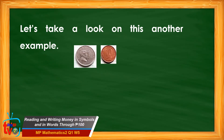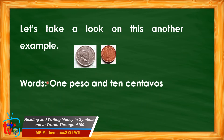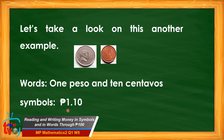Let's take a look at another example. We have the one-peso coin and ten-centavo coin. How do we write it in words? We write one peso and ten centavos. What about in symbols? We write the peso sign first, then one, followed by a decimal point, then ten centavos. The decimal point separates the peso from the centavos. We read this as one peso and ten centavos.